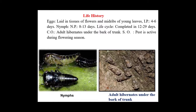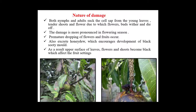Nature of damage by mango hoppers: both nymphs and adults suck cell sap from young leaves, tender shoots, and flowers, causing flowers and buds to wither and die. Damage is more pronounced in the flowering season. Premature dropping of flowers and fruits occurs. The pest excretes honeydew which encourages development of black sooty mold, and as a result the upper surface of leaves, flowers, and shoots become black, affecting fruit setting.